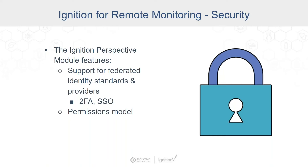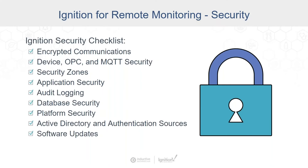Perspective also has a rich permission model that lets you choose different ways to secure Perspective apps. If you are expanding remote access to more of your workers, it is very important to have specific access controls for who is allowed to do what. Because no software is fully secure on its own, you have to secure your infrastructure as well. Users should take some basic steps to protect their Ignition installations and their overall architecture. We put together a basic set of best practices — a quick security checklist for Ignition.